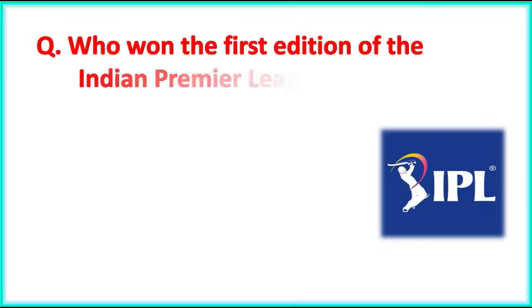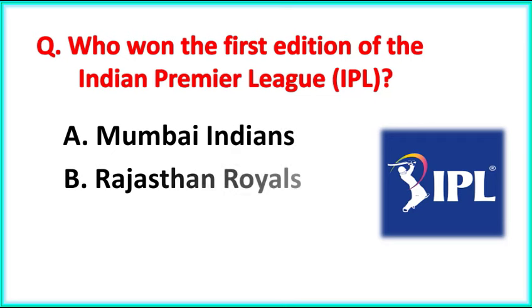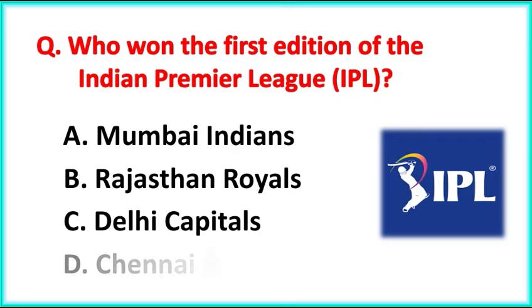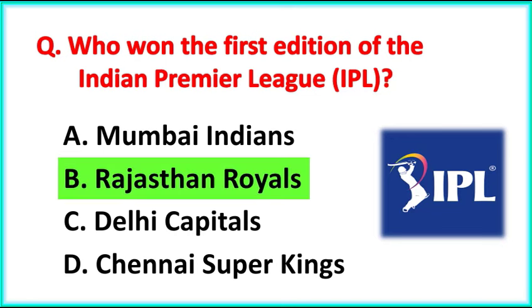Who won the first edition of the Indian Premier League (IPL)? The correct answer is option D: Rajasthan Royals.